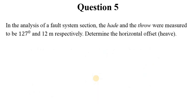Question 5: In the analysis of a fault system section, the hade and the throw were measured to be 127 degrees and 12 meters respectively. Determine the horizontal offset, what we call the heave.